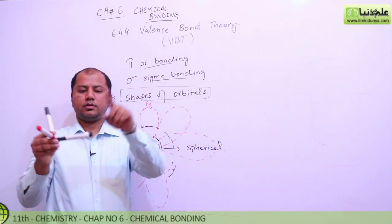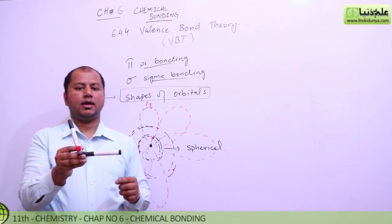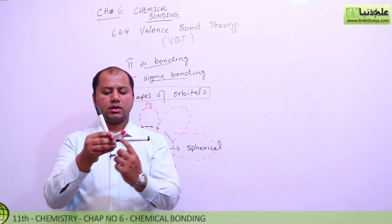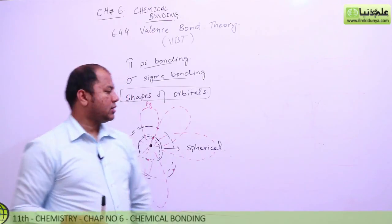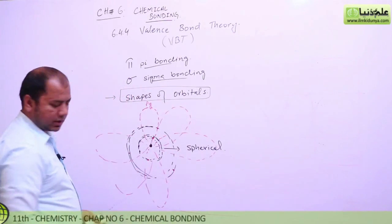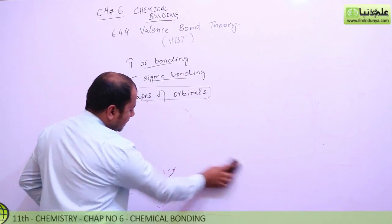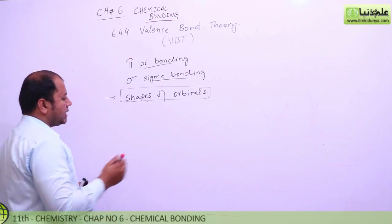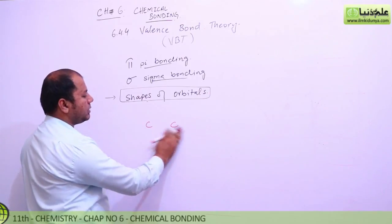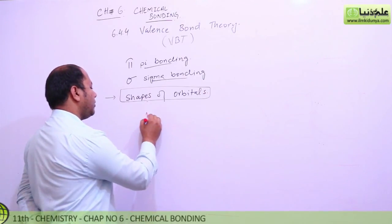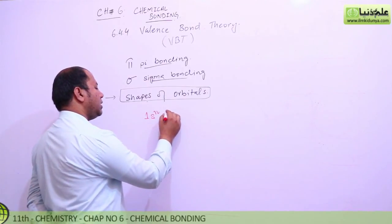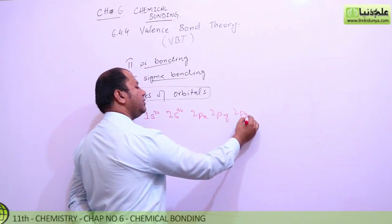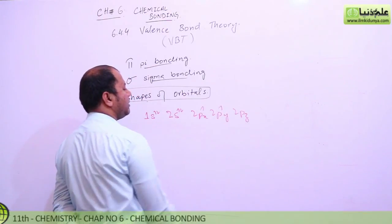So electrons move in these px, py, and pz movements around the nucleus. That's how you can explain the 3D orbital shapes. These are the shapes of orbitals I want to remind you about: 2px, 2py, 2pz with one electron here and one electron there. Now carbon is divalent.